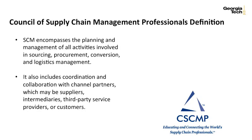This definition is more comprehensive in that it clearly spells out that sourcing and procurement are part of supply chain, as are conversion activities — otherwise known as manufacturing — and logistics activities such as transportation, warehousing, and inventory control and management. The definition also brings to bear the thought that supply chains are not single-entity activities. There are likely third parties involved with providing warehousing, transportation, or manufacturing, as items are transformed, moved, and stored from raw material state to finished goods state.